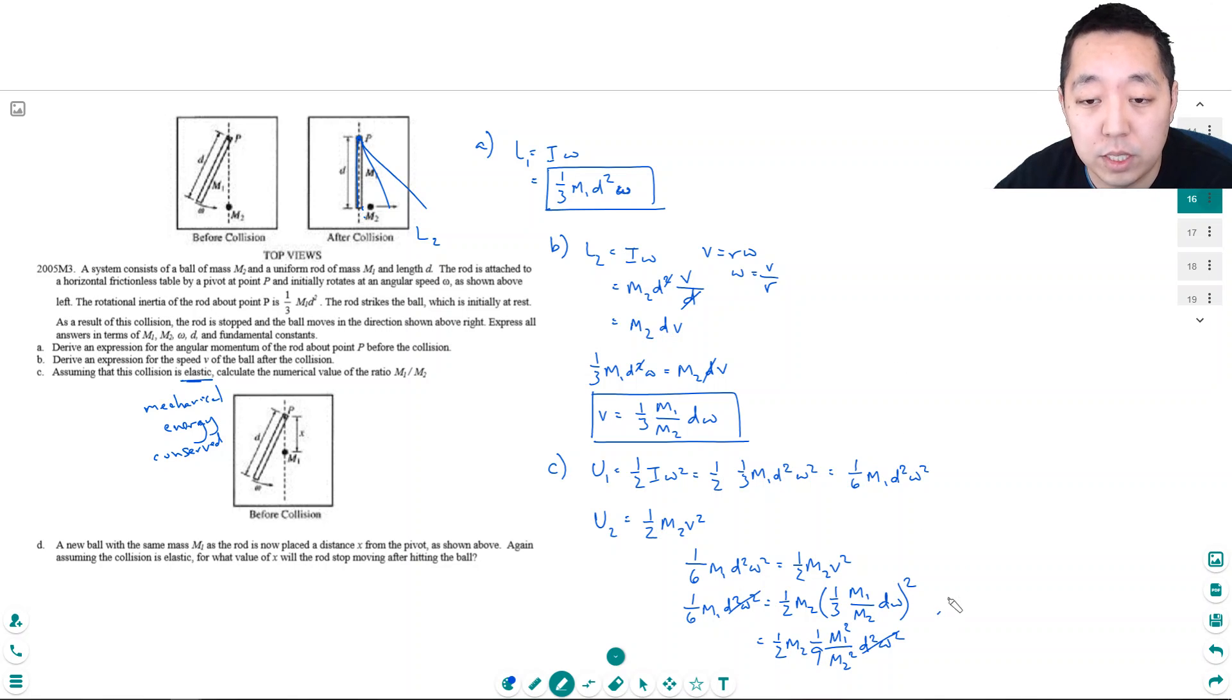So, I'm going to continue the math up here. I have 1 sixth m1 is equal to, this is 1 eighteenth, m1 squared over m2 squared. So one of these m1s cancel here and one of these m2s cancel here. And then I multiply this 18 over here. I get 3 is equal to m1 over m2.